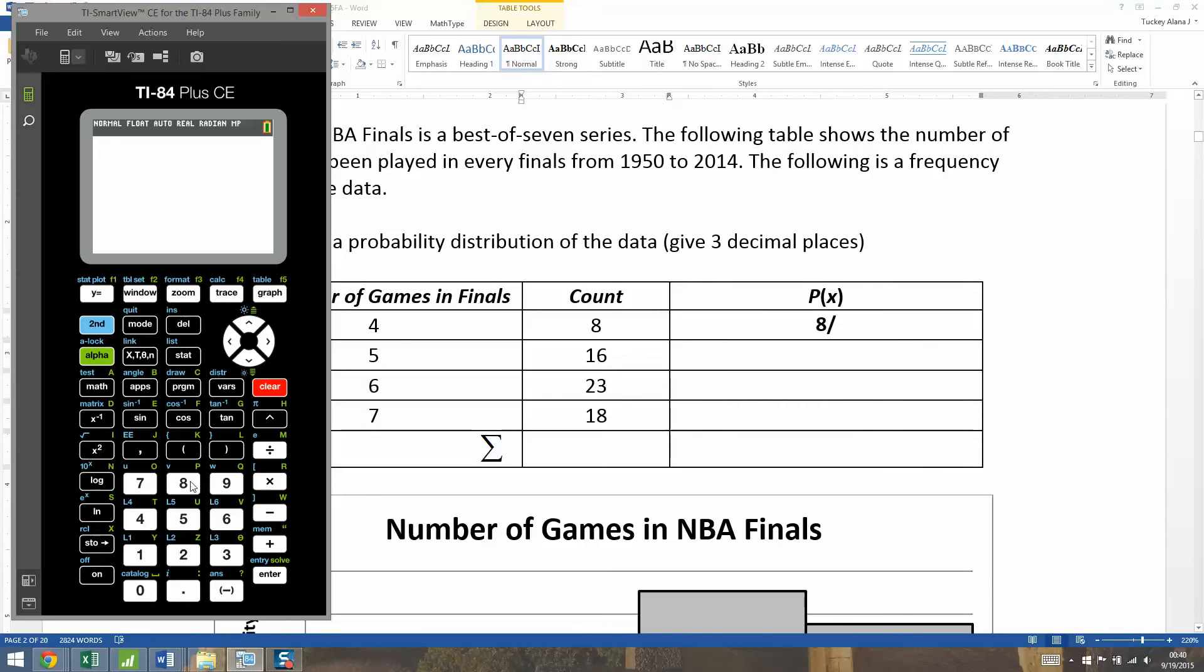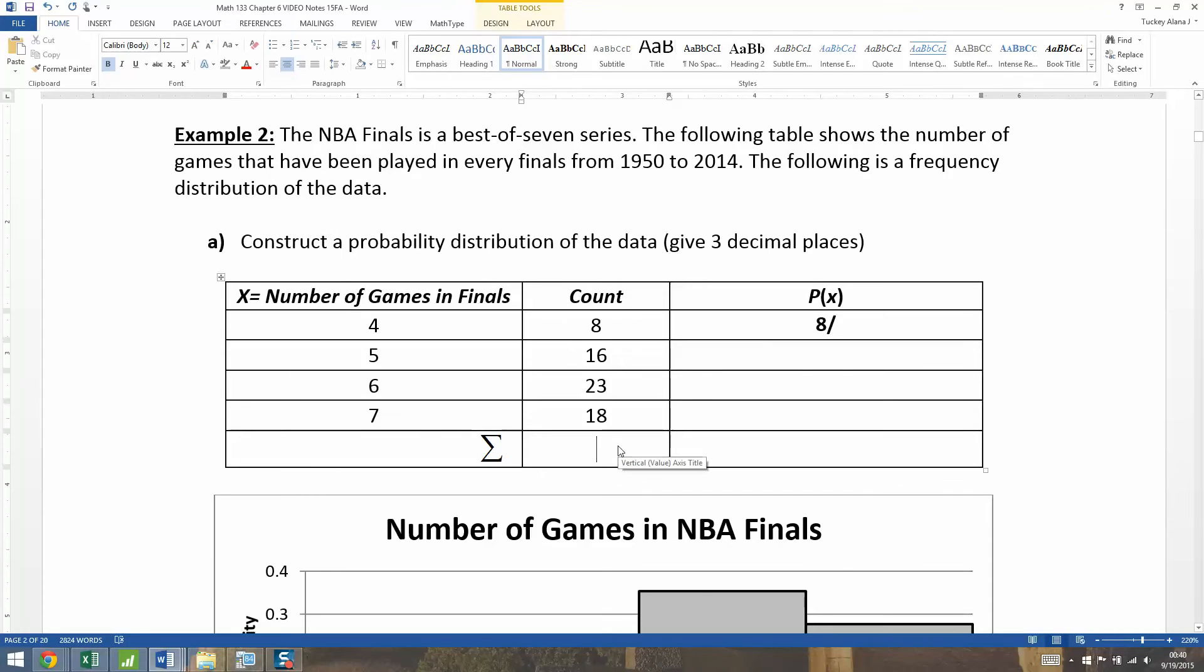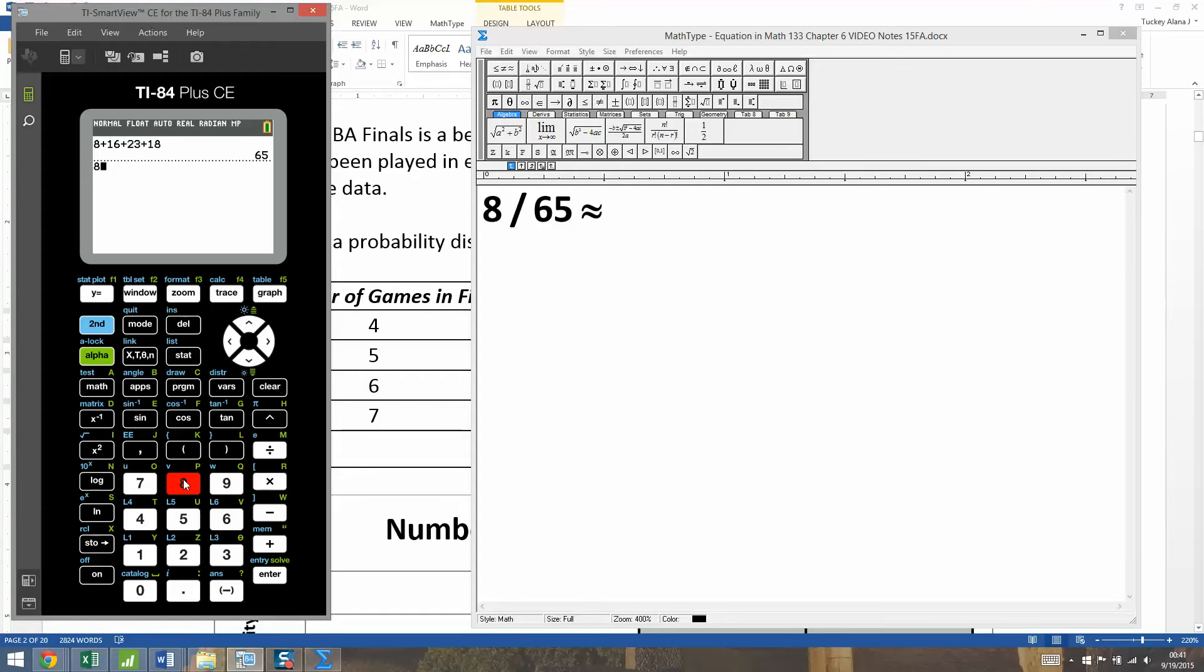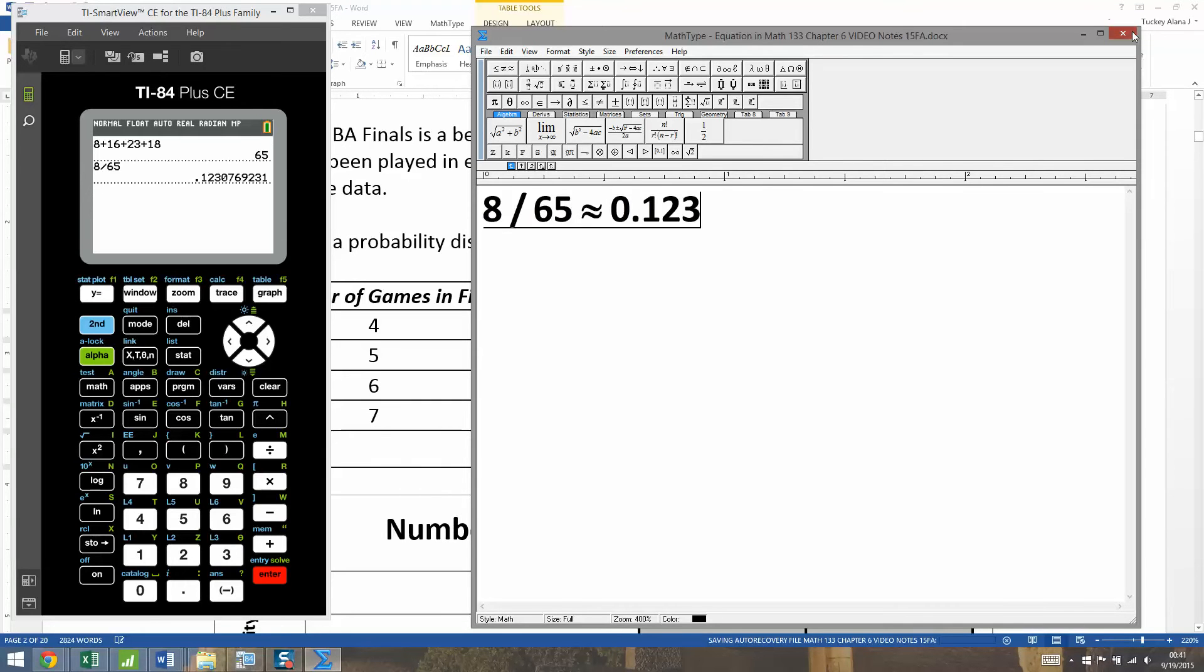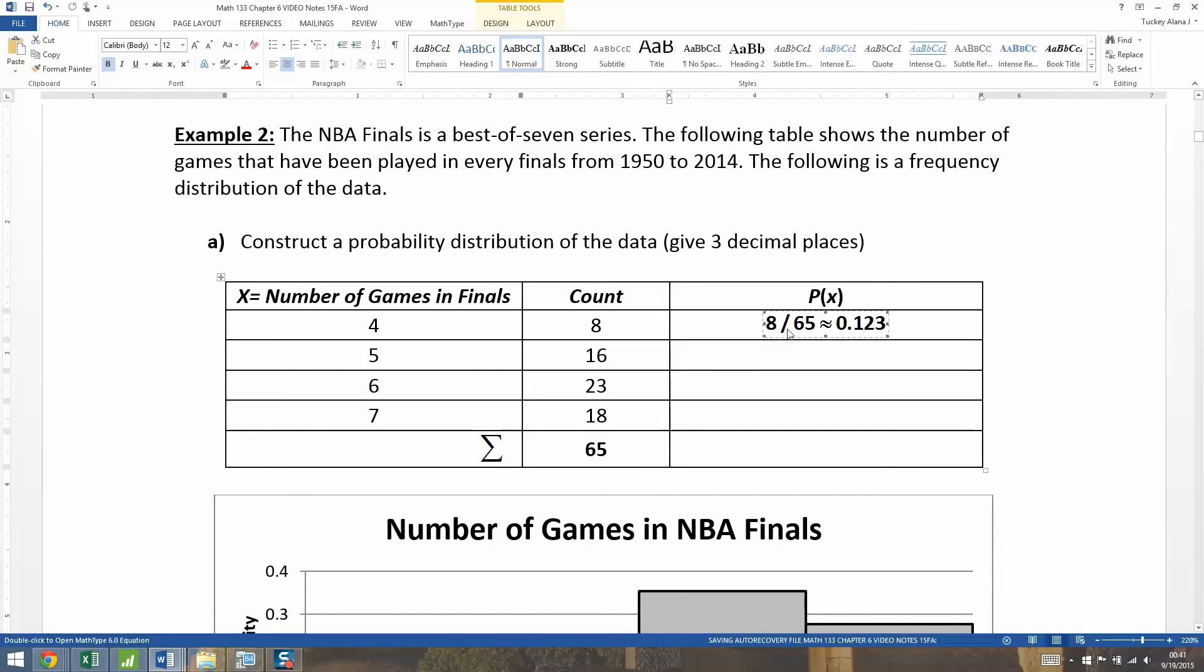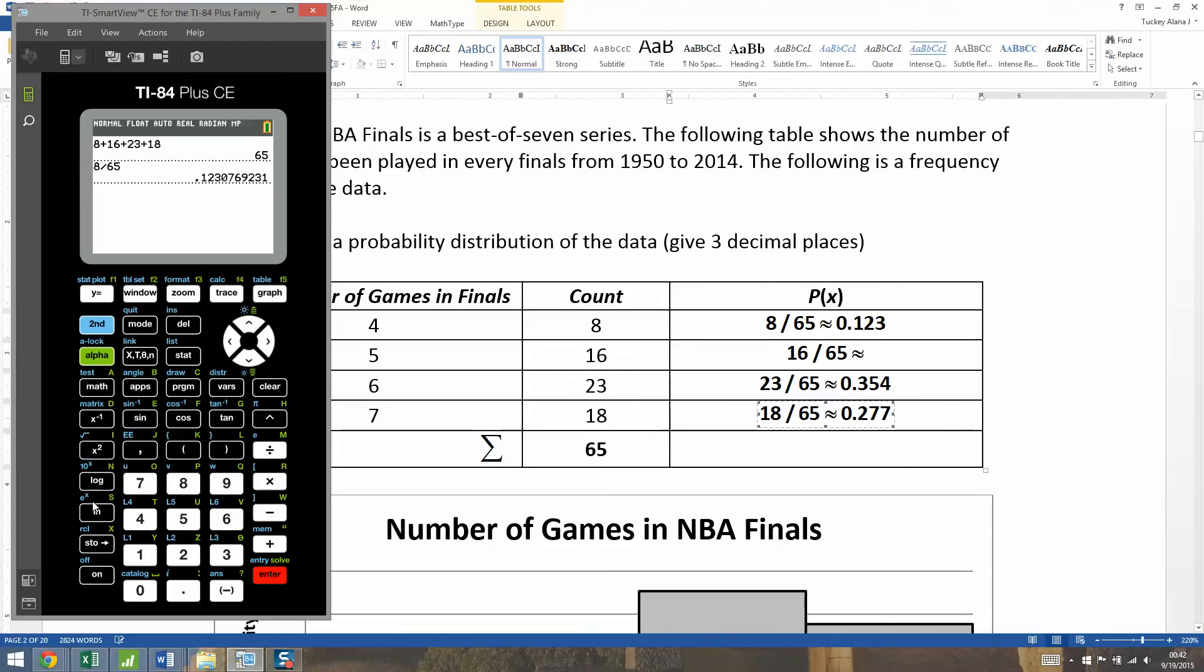We grab a calculator and type 8 plus 16 plus... and we get a total of 65. So we want 8 divided by 65, and it says to give three decimal places. 8 divided by 65 equals 0.123 when you round to three decimal places. Then we're just going to do it again for each of these other sets: 16 out of 65, 23 out of 65, and so on. 16 divided by 65 equals 0.246.